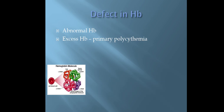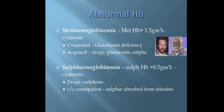The next defect is in hemoglobin. It can be either abnormal hemoglobin or excess hemoglobin — excess hemoglobin in case of primary polycythemia. Abnormal hemoglobin can be either methemoglobinemia or sulfhemoglobinemia. Cyanosis occurs when methemoglobin is more than 1.5 gram percentage. It can be congenital, for example in glutathione deficiency, or acquired due to drugs like phenacetin or sulfa.